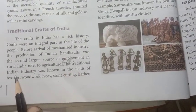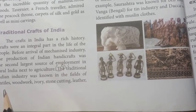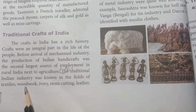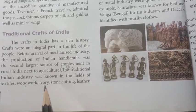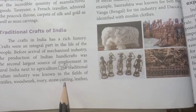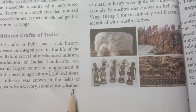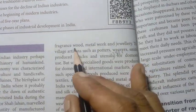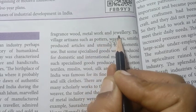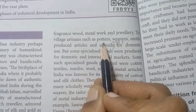The traditional Indian industry was known in the fields of textiles, woodwork, ivory, stone cutting, leather, fragrance wood, metal work, and jewelry.